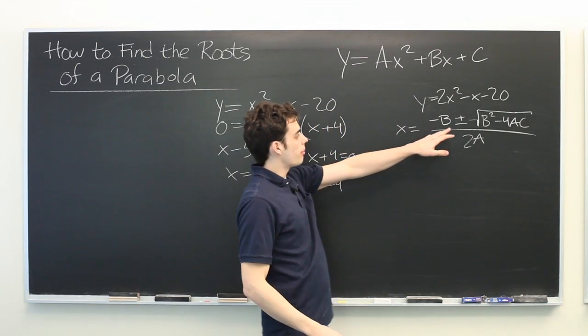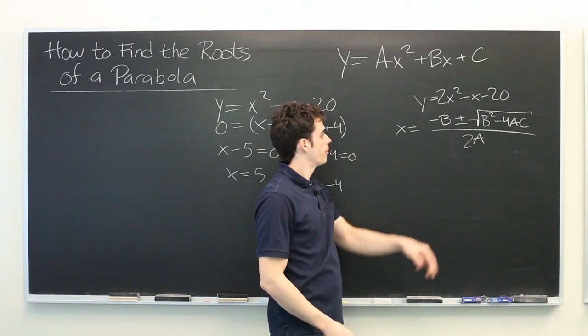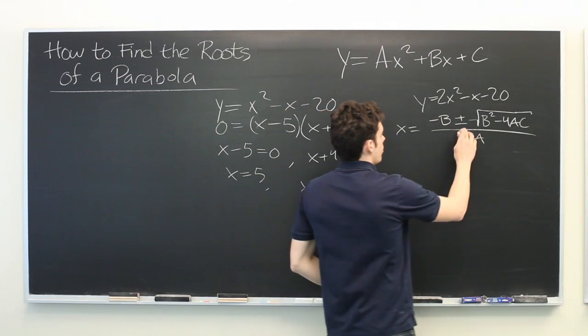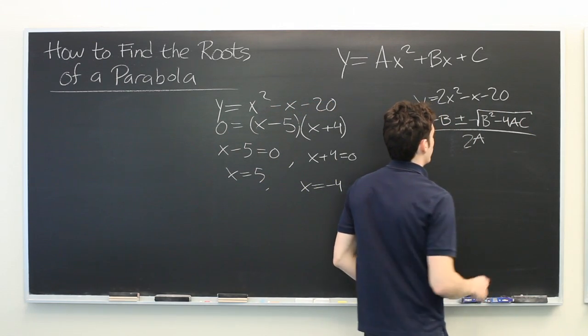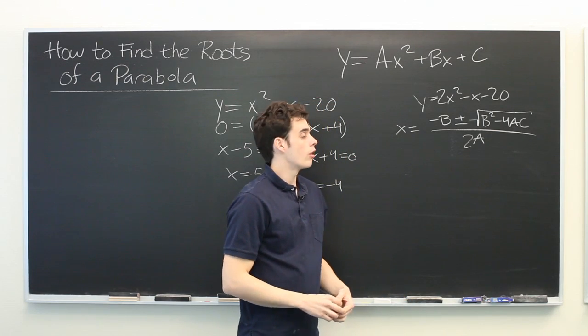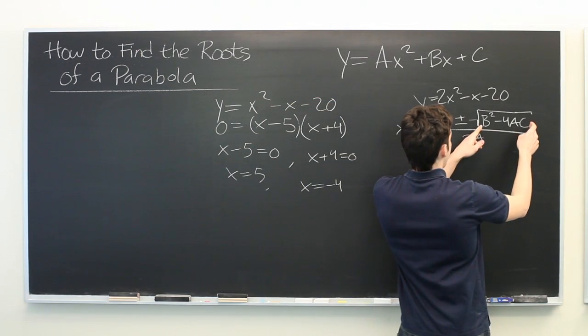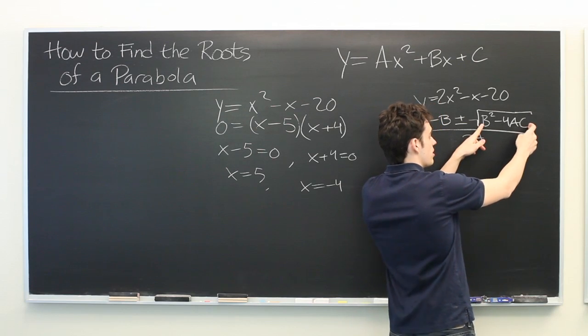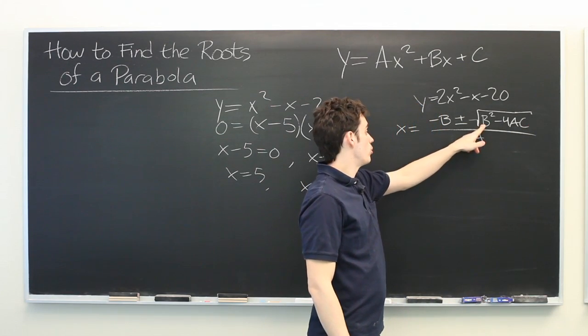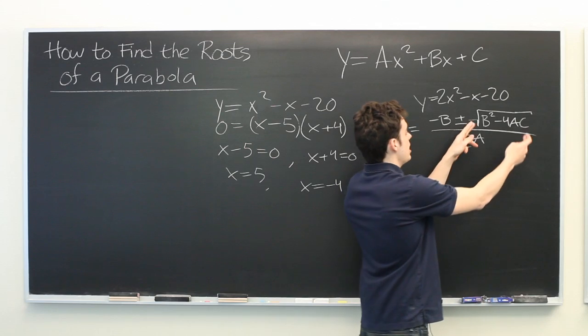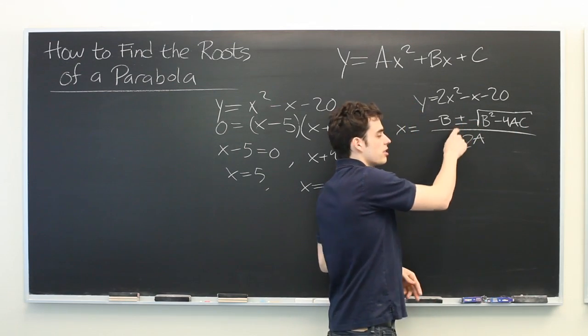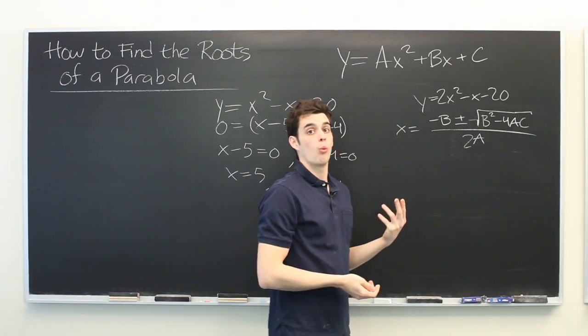Here the plus or minus means that we will get two answers. Note that the square root operation is only valid for non-negative numbers. If b squared minus 4ac is greater than zero, you will have two real roots. If it's equal to zero, then the plus and minus will be the same, so you'll only get one answer.